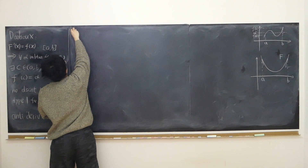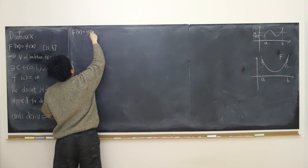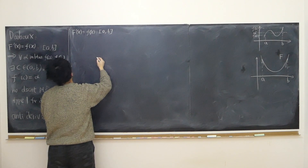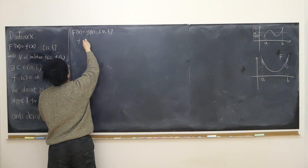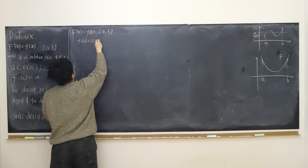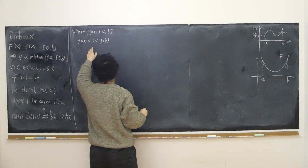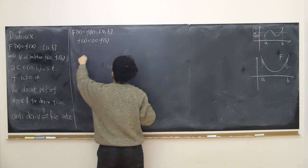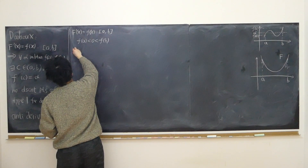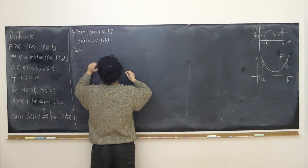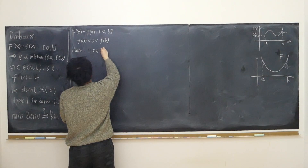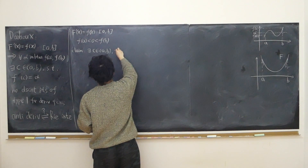I'm going to assume that f(a) is less than f(b), and also that f(a) is less than zero and zero is less than f(b). Alpha equals zero is my special case. I'll translate this special case into the general case later. My claim is: there has to exist some c in the open interval such that f(c) equals zero.